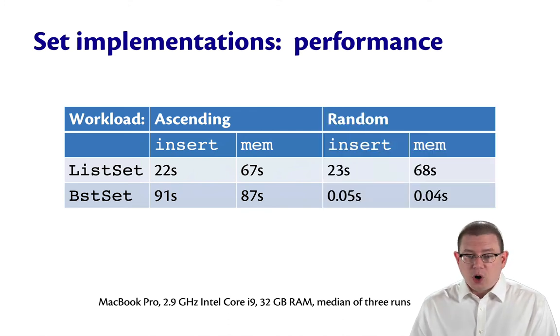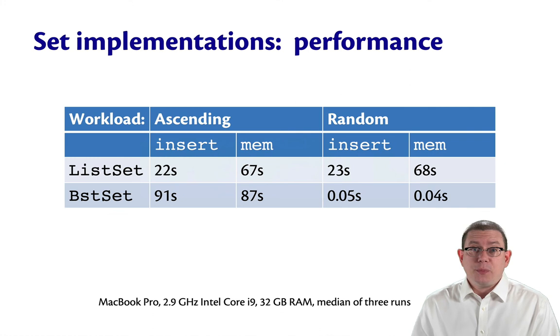For the random workload, we get a prettier picture. It's just about the same performance for list sets, but for BST sets, notice how fast we now have them working. We've got an insert that runs in 0.05 seconds for all 50,000 inserts and mem that runs in 0.04 seconds for all 100,000 membership tests. Those are the kind of numbers that we're looking for. And we get that better performance because the shape of the tree is better with the random workload. The tree looks more like one with short paths in it instead of one very long path.